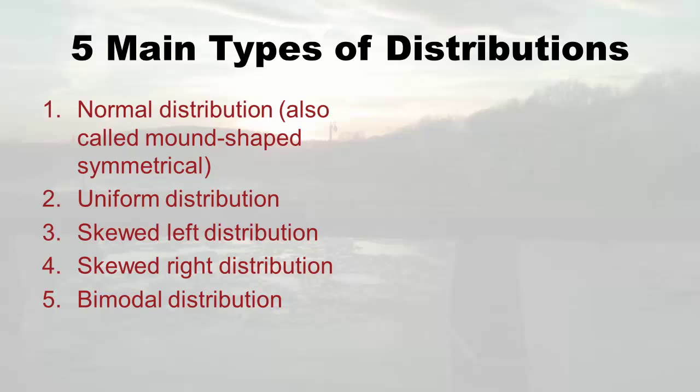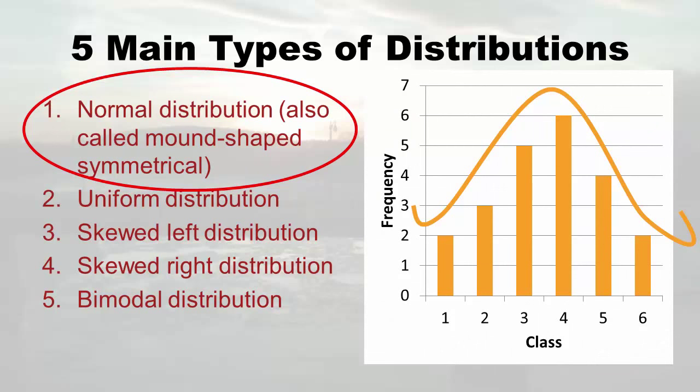The first is called the normal distribution — also called the mound-shaped symmetrical distribution in the book, but I'll call it normal. There's nothing really normal about it, it's just named that. If you draw a line along the bars, it looks mound-shaped and symmetrical — kind of like a little mountain with slightly hooked sides. If your histogram ends up looking like that, you've got a normal distribution.